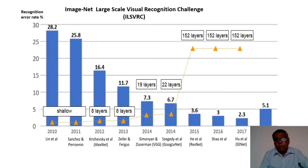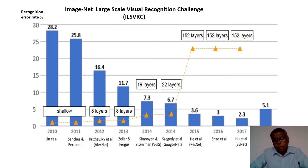Human error in classifying images in this database is about 5.1%. Some deep neural networks are now doing better than humans in image classification. Another example is breast cancer screening, where a convolutional neural network-based AI system detected cases that radiologists missed. Because the machine was well-trained on a large number of images, it very rarely makes mistakes, whereas humans can make errors — especially in certain moderate situations.